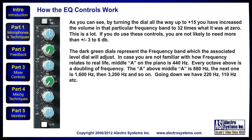That's a lot. If you do use these controls, you're not likely to need more than plus or minus 3 to plus or minus 6 decibels. The dark green dials represent the frequency band which the associated level dial will adjust. In case you're not familiar with how frequency relates to real life, middle A on the piano is 440 Hz. Every octave above is a doubling of frequency. So the A above middle A is 880 Hz, the next one is 1600, then 3200, and so on. Going down, 220 is the first A below middle A, 110 is below that, etc.